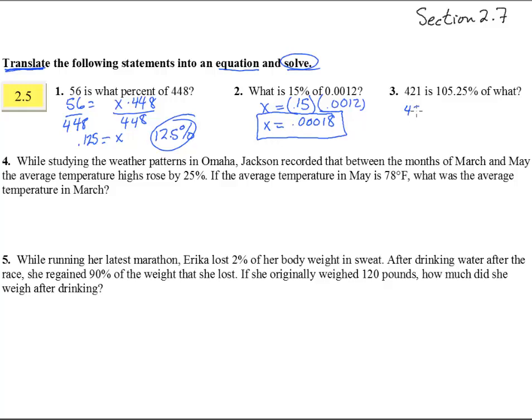Number three, 421 is 105.25 percent, that's 1.02525. So it moves two places that way, of what? So we divide by 1.0525,